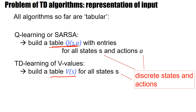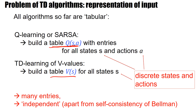This poses a potential problem, because even for quite simple problems you have many state-action pairs and many different states. There is something a bit strange because all these table entries are considered as independent. Through the learning algorithm — SARSA or TD learning — we try to implement a self-consistency between neighboring V values or neighboring Q values, where 'neighbor' is meant in a temporal sense.